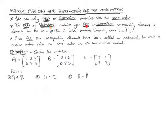So the first thing to understand is you can only add or subtract matrices that have the same order. To add or subtract matrices, what you do is add or subtract corresponding elements. So elements in the same position in both matrices, meaning they have the same I and J positioning. Once all of the corresponding elements have been added or subtracted, the result is actually another matrix that has the same order as the two matrices you added in the first place.